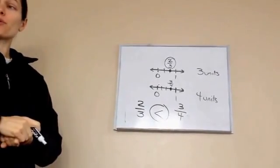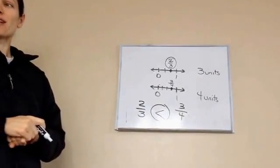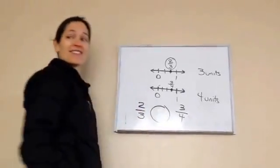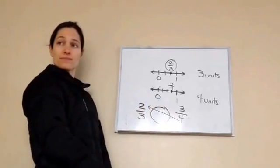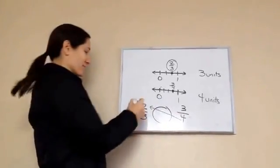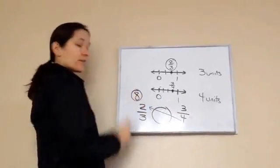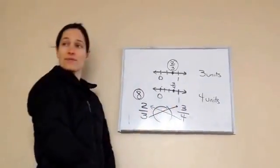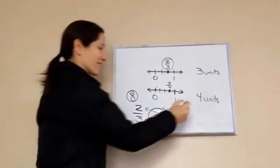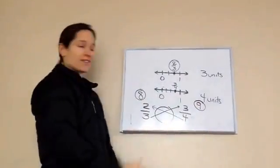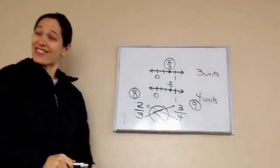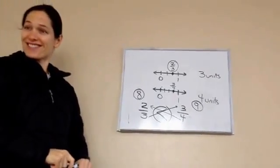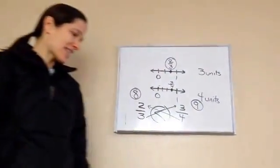There's actually a cheat you can do. What is four times two? Eight — I'm going to put an eight here and circle it. What is three times three? Nine — I'll put it here and circle it. Which one's bigger? Nine. Ba-bam! Isn't that cool? You can do that every time and it works. That's lesson 38.